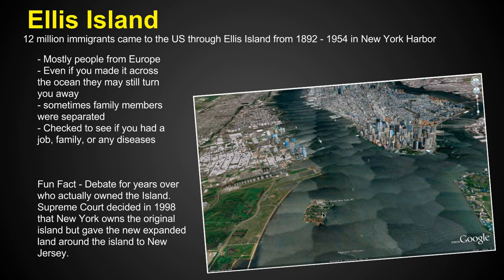Imagine getting all the way to the United States and being turned around at Ellis Island. Reasons for rejection included whether you had a job lined up — if so, you could take care of yourself and wouldn't become a burden. If you didn't have a job or family in the United States, they might send you back. They also checked for diseases like trachoma, an eye disease, and if you had those, they would send you all the way back.